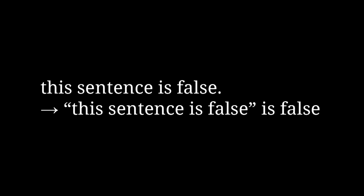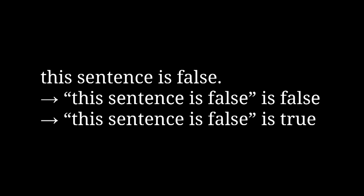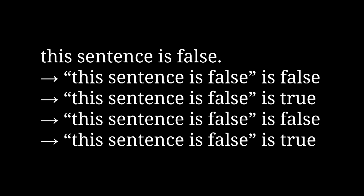If this sentence is false, then it's true, because I said it's false, and it is. But since it's true, that means it can't be false, so actually this sentence is false, which means it's true. No matter what, you cannot meaningfully give this statement a truth value, because any possible explanation is wrong. It's a logical contradiction.